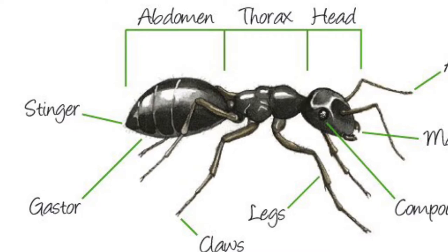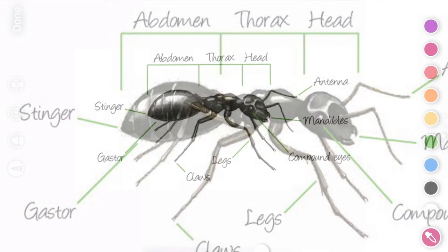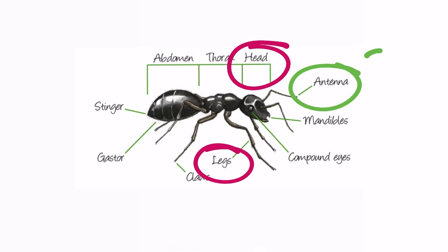This is a great time to make personal connections. Ants have a head and legs just like us, but do we have an antenna? Do we have mandibles? How can we make this personal?